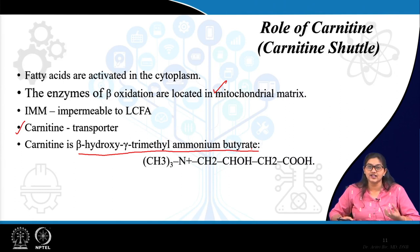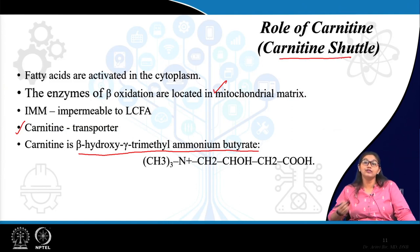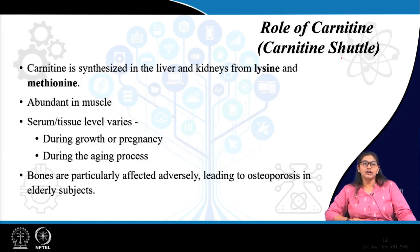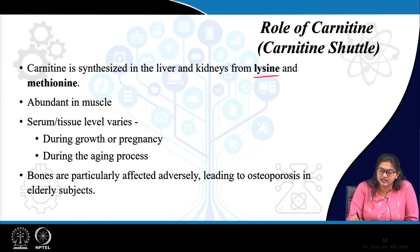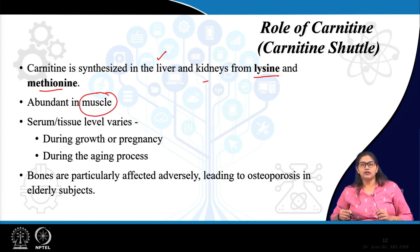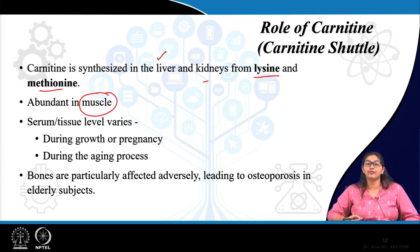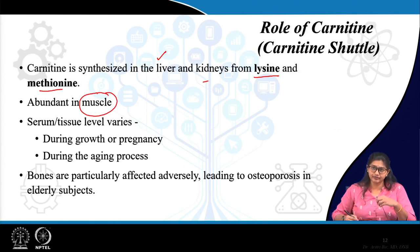Long-chain fatty acids need the carnitine transporter, and that transport mechanism is known as the carnitine shuttle. Regarding carnitine: it is synthesized from the amino acids lysine and methionine — important for MCQs. It is synthesized mostly in the liver and also in the kidney, and is abundantly present in muscle. There is variation in serum or tissue levels during growth or pregnancy when high amounts of carnitine are required, and in aging when synthesizing capability is low, leading to low serum carnitine levels.